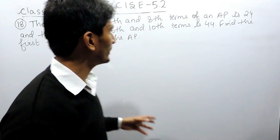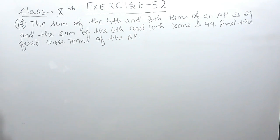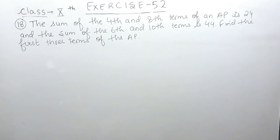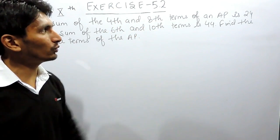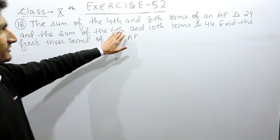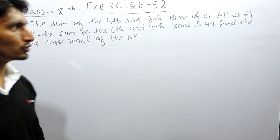Hello everyone. In this video we are going to solve question number 18 of exercise 5.2. The question says: the sum of the 4th and the 8th term of an AP is 24, and the sum of the 6th and the 10th term is 44. You have to find the first 3 terms of the AP.